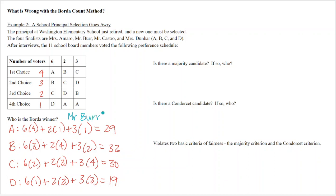Now, is there a majority candidate — did someone receive a majority of the first place votes? Yes. Miss Amaro had six of eleven votes, which is a majority. Is there a Condorcet candidate? We can figure that out by looking at all the head-to-head matchups.